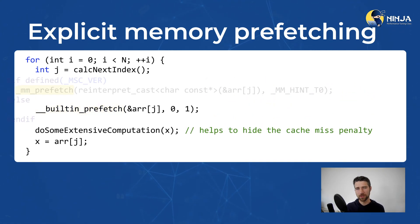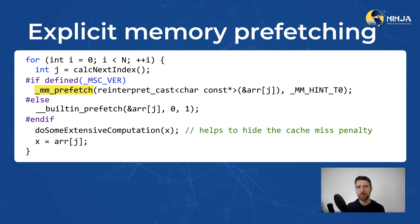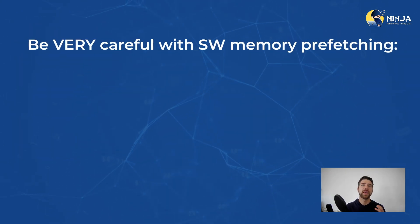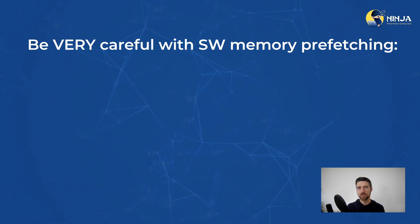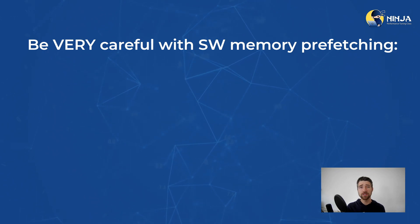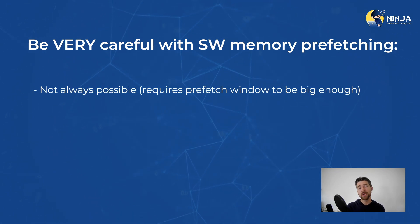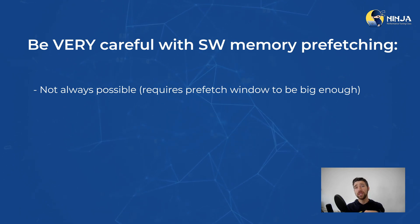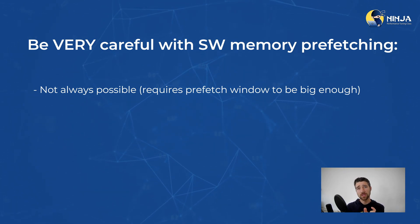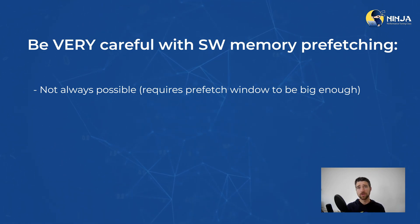Here I show you the Microsoft compiler version of the memory prefetching hint — it is slightly different, but the idea is essentially the same. Now, as usual, there are caveats, and in general you should be very careful when using explicit memory prefetching. First, sometimes it's not even possible. Imagine some long dependency chain which leads to a load that misses in cache — there is no prefetching window where you can insert your hints.